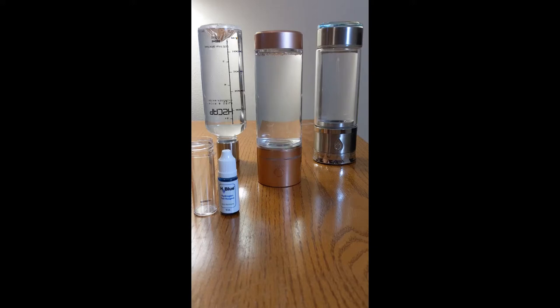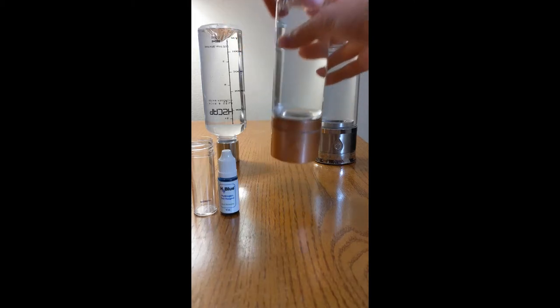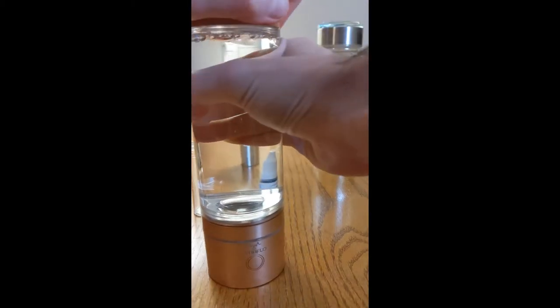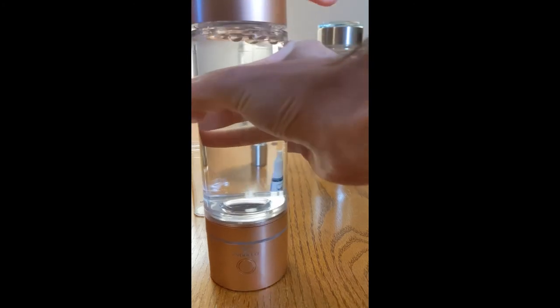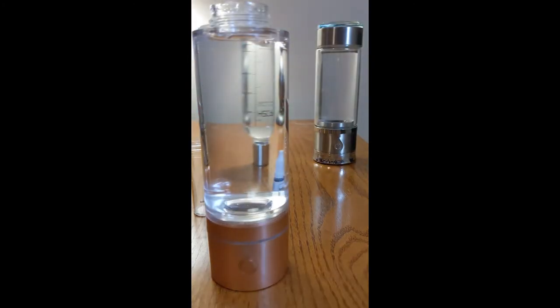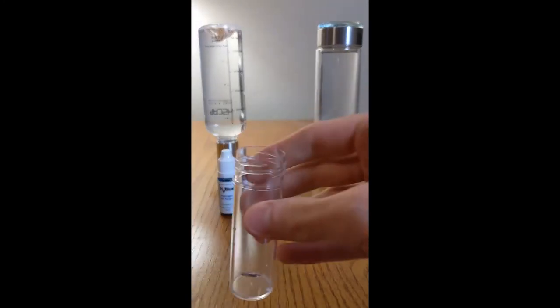That was a single five minute cycle. Now let's measure our hydrogen concentration. Each drop represents 0.1 parts per million or 100 parts per billion. You can see there's a lot of nice back pressure of the hydrogen bubbles. We'll measure out exactly 6 mLs.